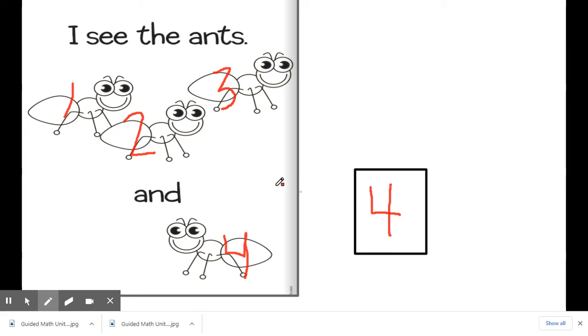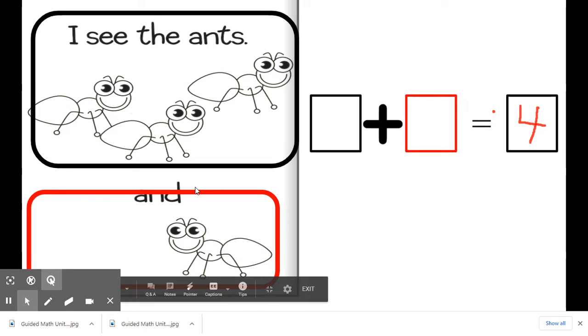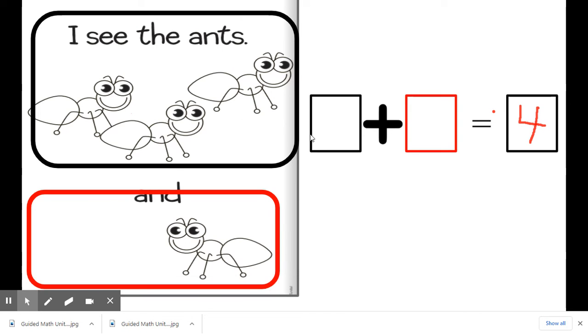Okay, now we're going to practice making a number sentence using the pictures that we see. We already knew that there were four ants all together or in total. Now we're going to practice creating a number sentence. And remember in a number sentence there are two sets of objects. So let's look at the first set of objects. How many do we have? Let's count and see. One, two, three.